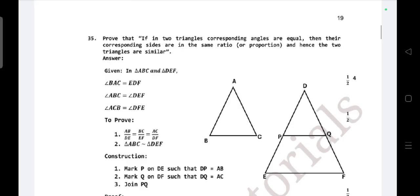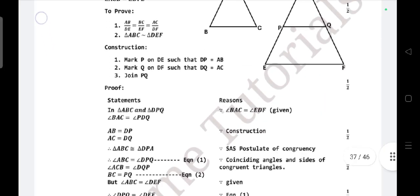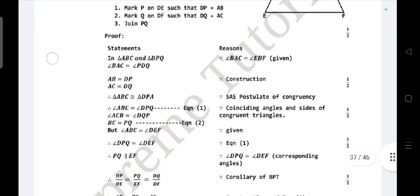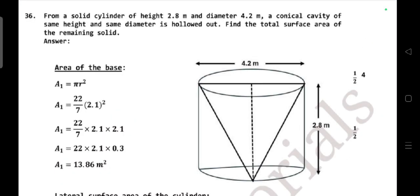Next, four mark questions. Prove that if two triangles have corresponding angles equal, then the corresponding sides are in the same ratio, hence the two triangles are similar. From a solid cylinder of height 2.8 meters and diameter 4.2 meters, a conical cavity of the same height and same diameter is hollowed out. Find the total surface area of the remaining solid.